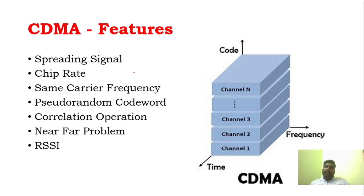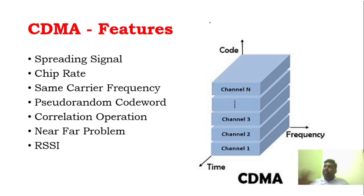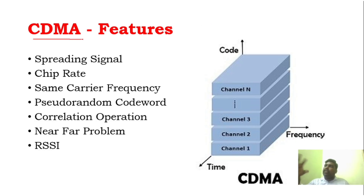In CDMA, there is no such limitation — no frequency division or time division limitation. Any number of users can use the complete bandwidth. That feature is called Code Division Multiple Access. All users are able to use it simultaneously. They use a concept called the spread spectrum concept. Using pseudo-random codes, each user's data is multiplied by a particular code to produce a spread signal.